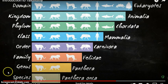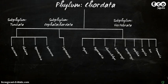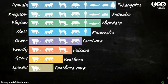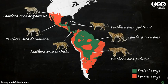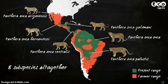Other Chordata classes include our feathered backbone relatives, the birds, and the aquatic jawless fish. Again, we can add intermediate ranks. In the case of the jaguar, we get subspecies. Jaguar populations differ morphologically and genetically because of isolation and their subsequent adaptations. Jaguars have eight recognized subspecies.